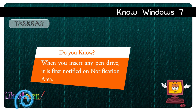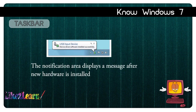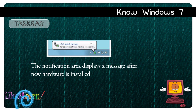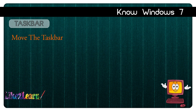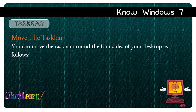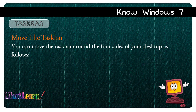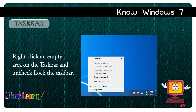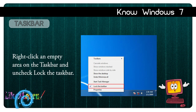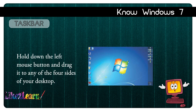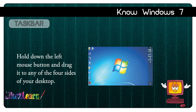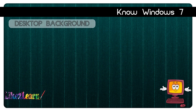The Notification Area displays some common program icons such as sound, power option, network connection, and antivirus program. Do you know: when you insert a pen drive, it is first notified in the Notification Area. The Notification Area also displays a message after new hardware is installed. You can move the taskbar to any of the four sides of your desktop: right-click an empty area on the taskbar, uncheck 'Lock the Taskbar', then hold down the left mouse button and drag it to any side.